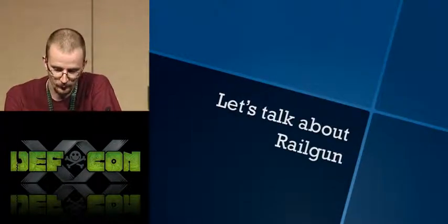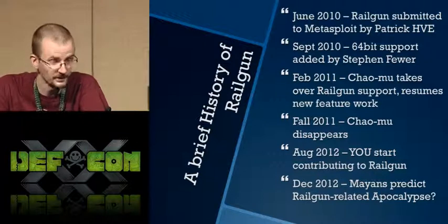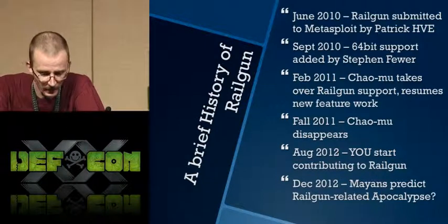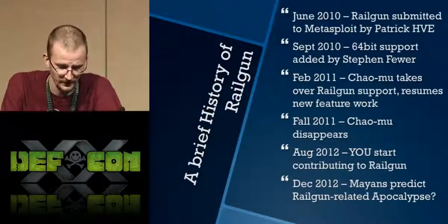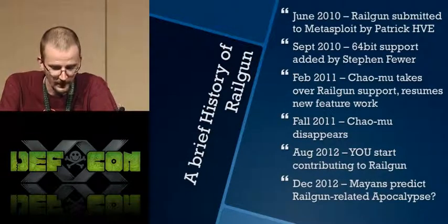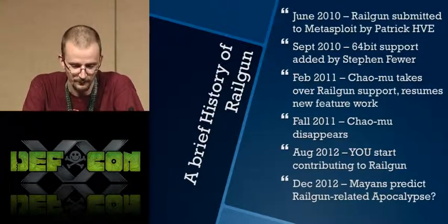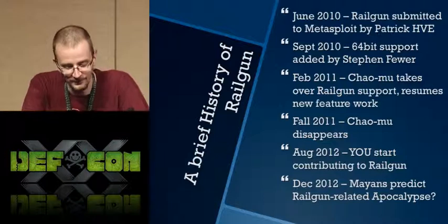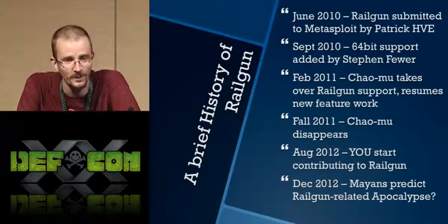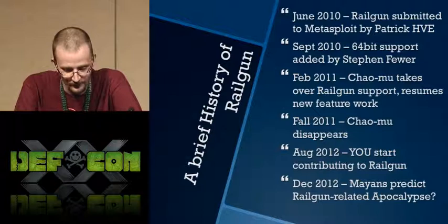In June of 2010, a community user called Patrick HVE submitted Railgun via the mailing list — it was just an extension for Meterpreter to load at the time. By September, Steven Fuhrer had added 64-bit support. In February 2011, Chao Mu, another user on the IRC community, took over support for Railgun and started adding new features and patches. But by fall of last year, he kind of just disappeared off the face of the earth. Starting August 2012, hopefully some of you will start contributing back to Metasploit and Railgun.